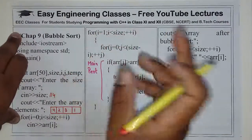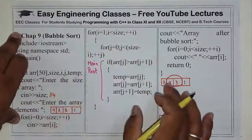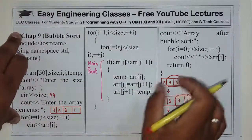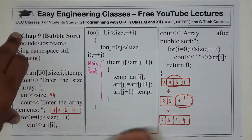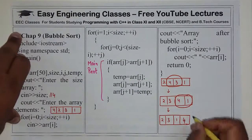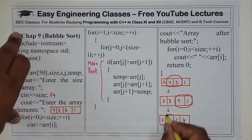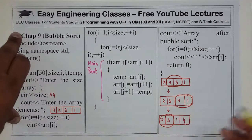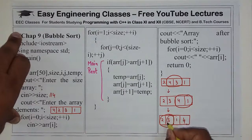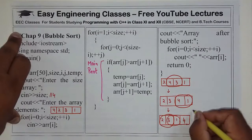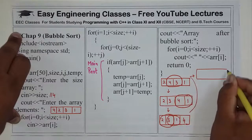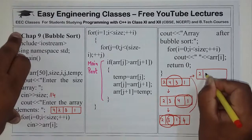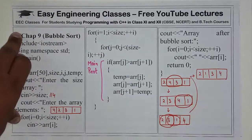i को हमने कितना चलाना है, जितना हमारा number of elements है. यहां पर 4 elements थे तो एक हम कम चला रहे हैं क्योंकि हम आखरी वाले को compare नहीं करना चाहते. अब दुबारा यह loop चलेगा इस वाले array के लिए. पहले दो elements का comparison — कोई interchange की जरूरत नहीं. Second comparison में interchange की जरूरत है तो यह बन जाएगा: 2, 1, 3, और 4.